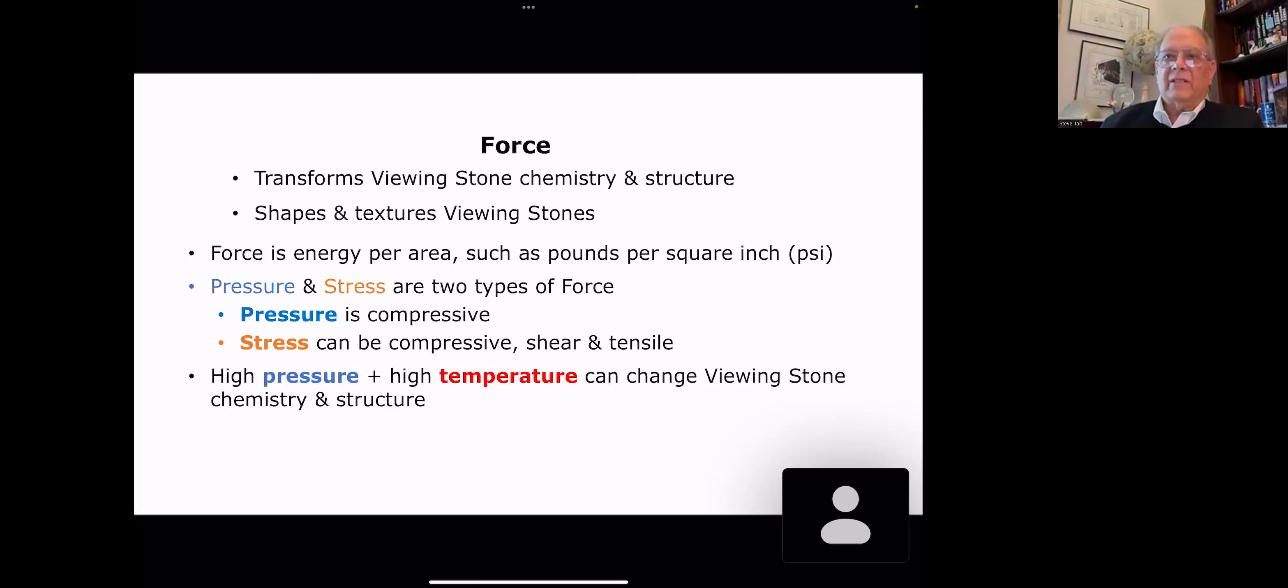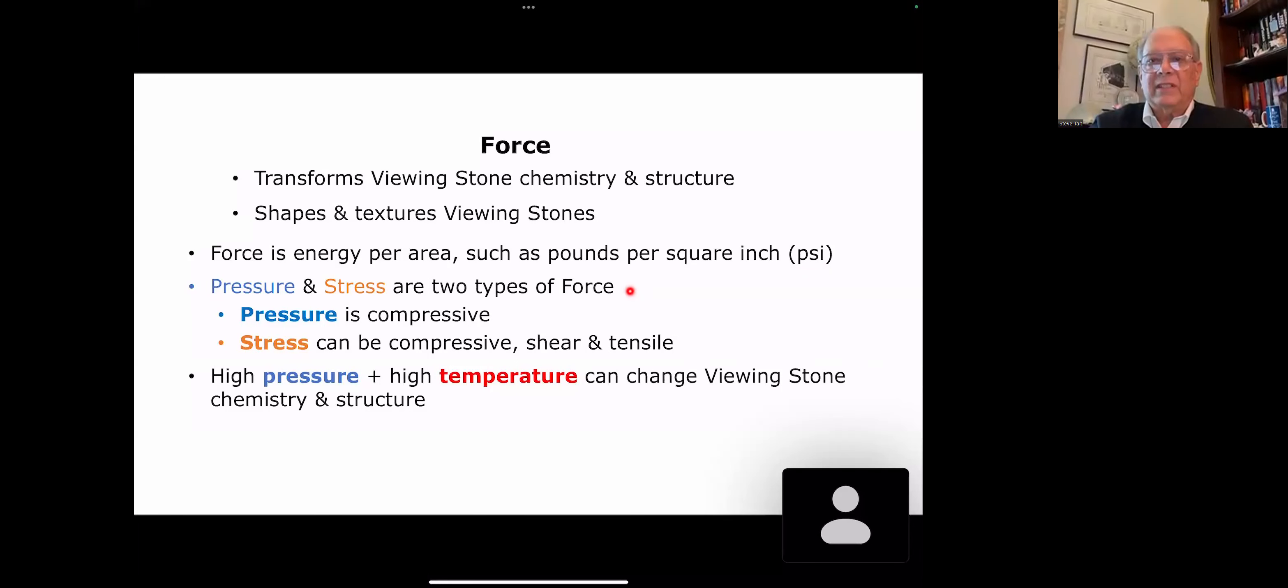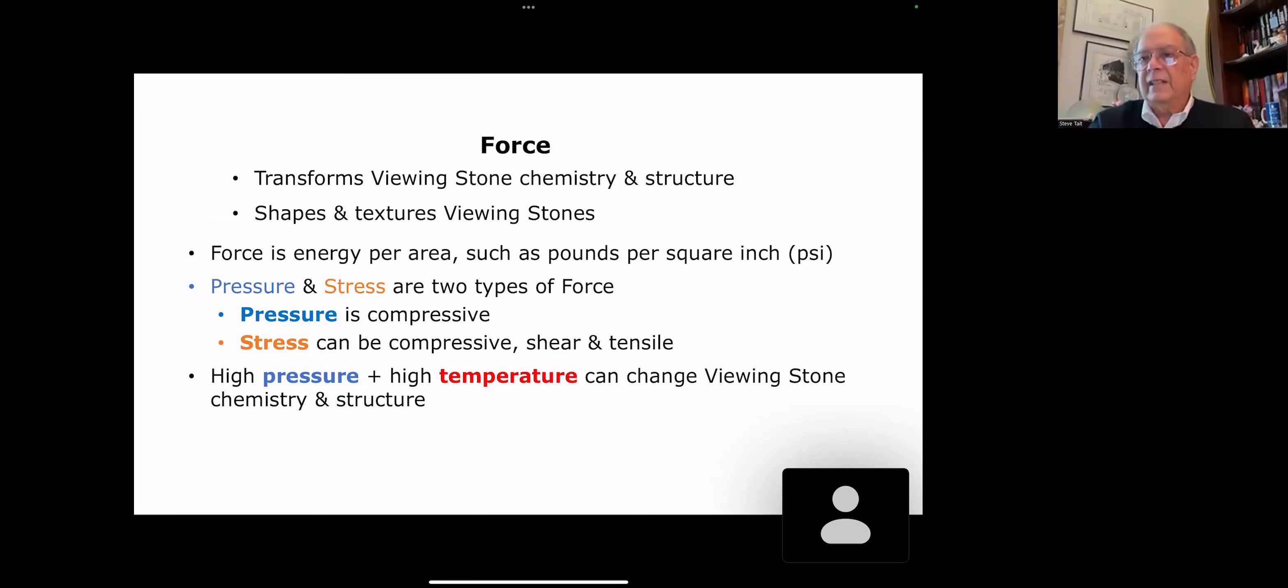Force is a little more complex, but it does transform viewing stone chemistry and structure. It also shapes and textures viewing stone. Force is kind of an oblique concept. It's the amount of energy per area. There are a number of terms. I'm going to use pounds per square inch. There's also mega pascals per square inch. PSI is the abbreviation for pounds per square inch. Two types of forces, pressure and stress. Pressure is compressive, and stress is complex. It can be compressive, shear and tensile, and a combination of these different kinds of pressures.